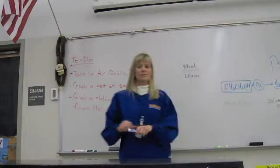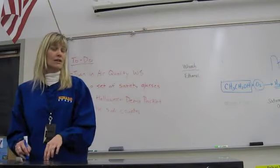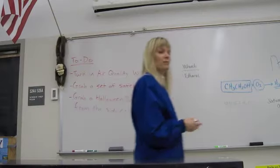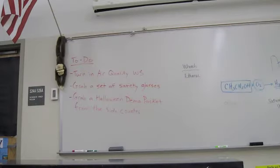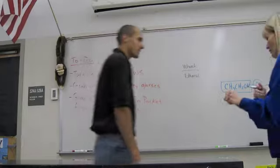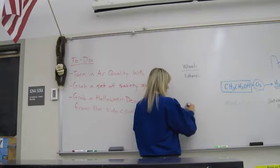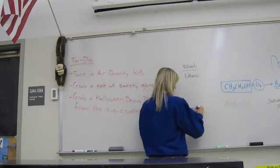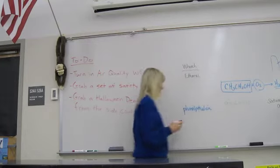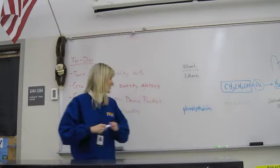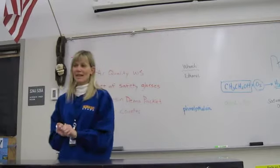Anytime we have acid bases, there's generally acid base indicators. So you've heard of pH paper before. Sometimes you might have done a lab where you use cabbage juice. But in this case, we use something called phenolphthalein, which is a pretty hard word to spell — which I have just learned how to actually spell without having to look at it over the last two days. Phenolphthalein. And it is an acid base indicator.